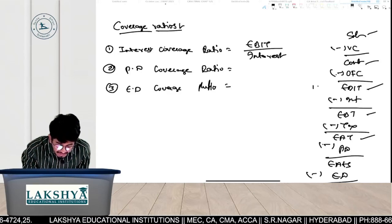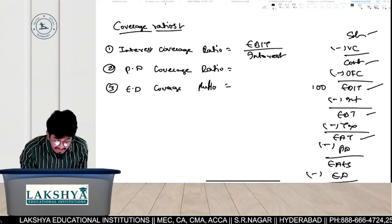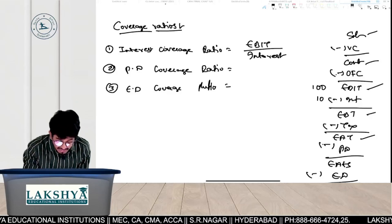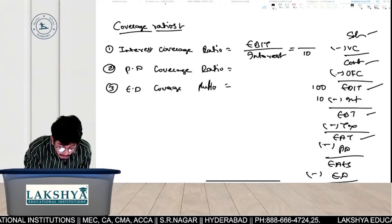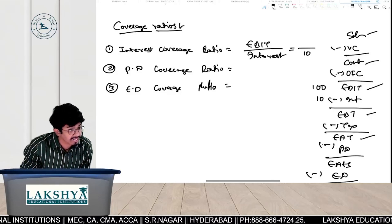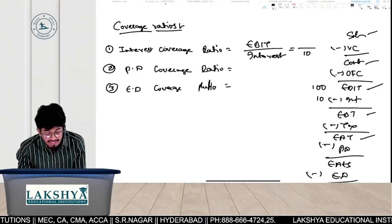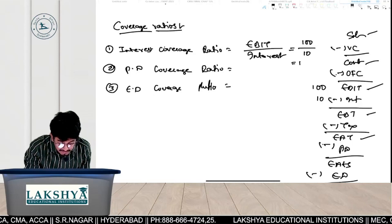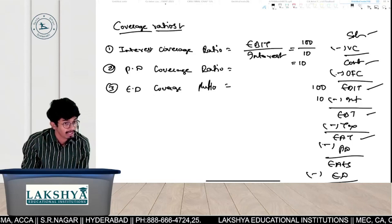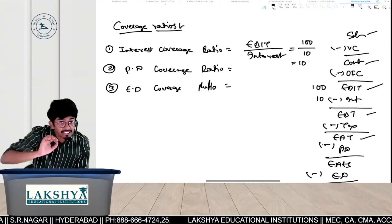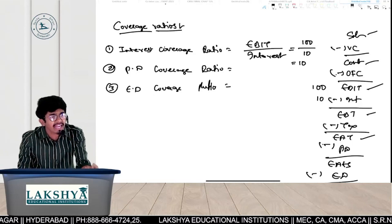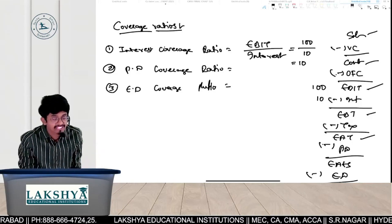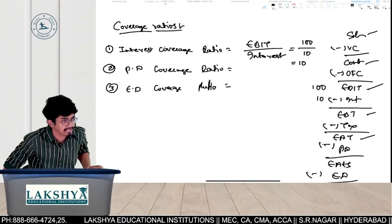For example, EBIT is 100 rupees and Interest is 10 rupees. So Interest Coverage Ratio is 10 times. The logic is: for every 1 unit of interest, the company is earning 10 units — so debt holders are well covered.